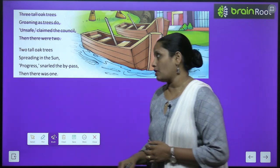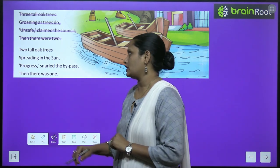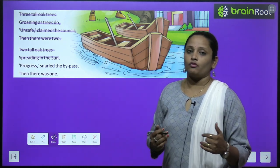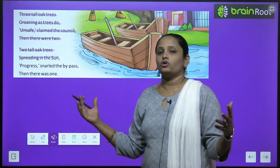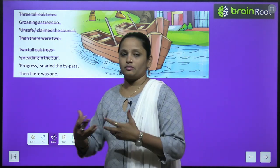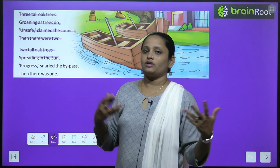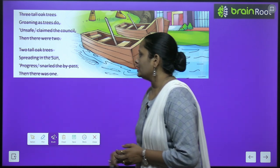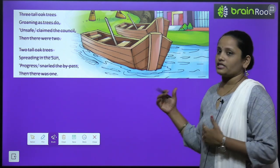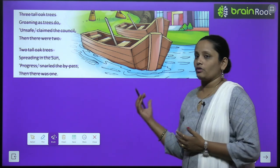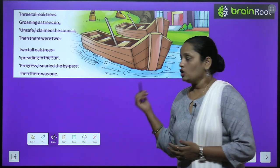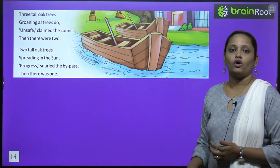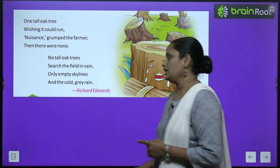'Two tall oak trees spreading in the sun, progress nulled the bypass, then there was one.' دو trees sun میں اپنے leaves spread out کر رہے تھے۔ ایک پاسر بائی — گزرتا ہوا آدمی — وہاں سے گزرا اور اسے اس پیڑ کی ضرورت تھی، تو اس نے بھی ایک پیڑ کاٹ دیا۔ And then there was one — صرف ایک tree بچا۔